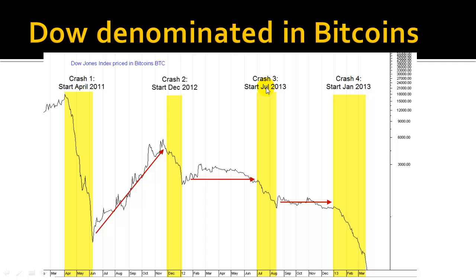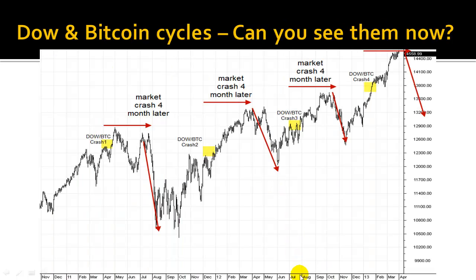The third crash occurred at the beginning of July 2012 — a big drop in the Dow Jones charted in Bitcoins. July 2012 is marked here on the chart. Again, counting four months into the future — one, two, three, four — in the fourth month you see this big drop in the real market for the Dow Jones index. The cycle has now become real for the third time: the market crash occurred four months after the crash was seen in the Bitcoin chart.